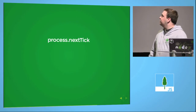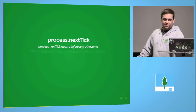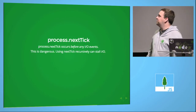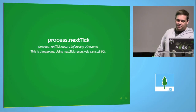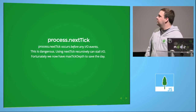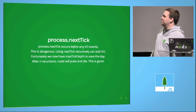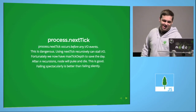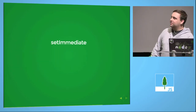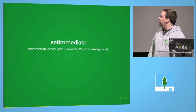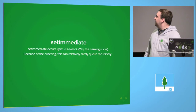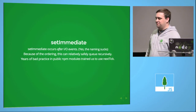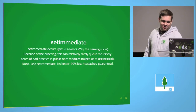process.nextTick occurs before IO — this is dangerous, because it can stall IO. If you keep queuing more nextTick items, it could stop IO from ever happening. Fortunately, we've kind of fixed that with max tick depth: after N recursions, Node will throw an error and die. Failing spectacularly is better than failing silently. There's also setImmediate — setImmediate occurs after IO events. Yes, the naming kind of sucks. Because of the ordering, it can relatively safely queue recursively. Years of bad practice have led us all to use nextTick — don't. Use setImmediate. It's better. 99% less headaches, guaranteed.